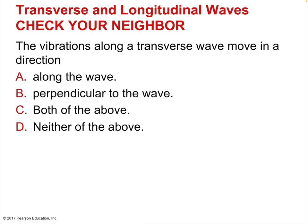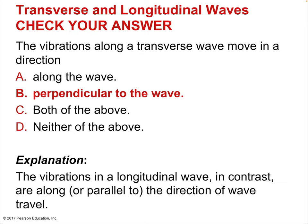The vibrations along a transverse wave are perpendicular to the wave direction. If it were a longitudinal wave, the vibrations would be along the wave — parallel to it. So longitudinal waves involve parallel or along-the-wave motion, while transverse waves involve perpendicular motion. That's the key difference between the two types.